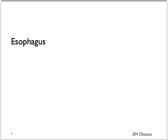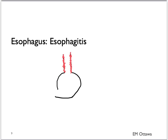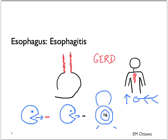Moving on to the esophagus — there are a few causes of bleeding from the esophagus, including inflammation, tears, and varices. Esophagitis, or inflammation of the esophagus, often presents with symptoms associated with gastroesophageal reflux. The patient might present with retrosternal chest pain that is worse when lying down and better when sitting up, and the pain is usually worse after a big meal. In terms of presentation, it tends to be small volume and can be hematemesis, coffee ground emesis, or melena.